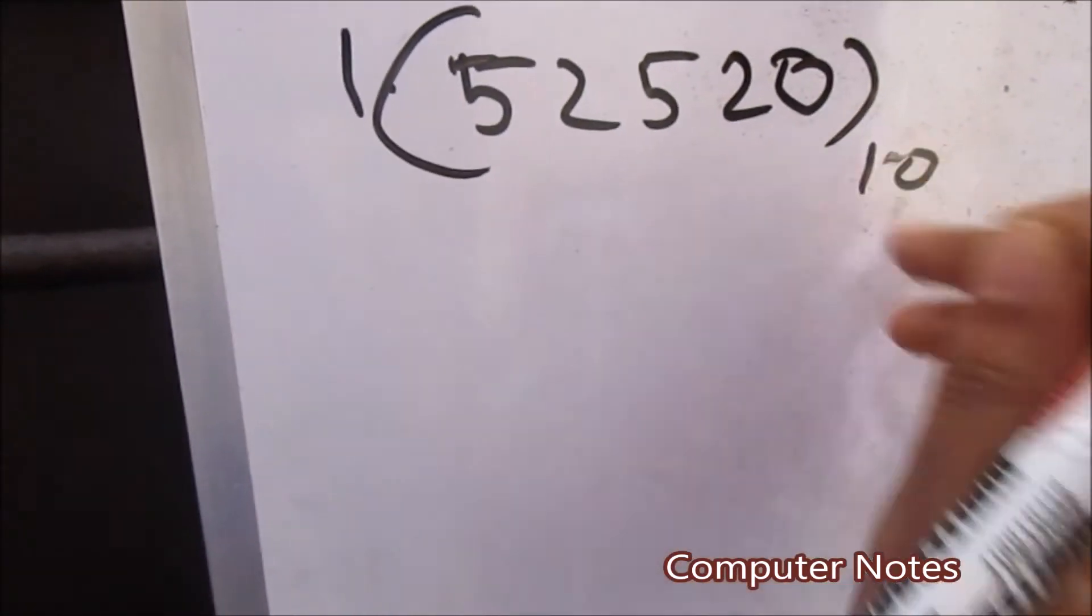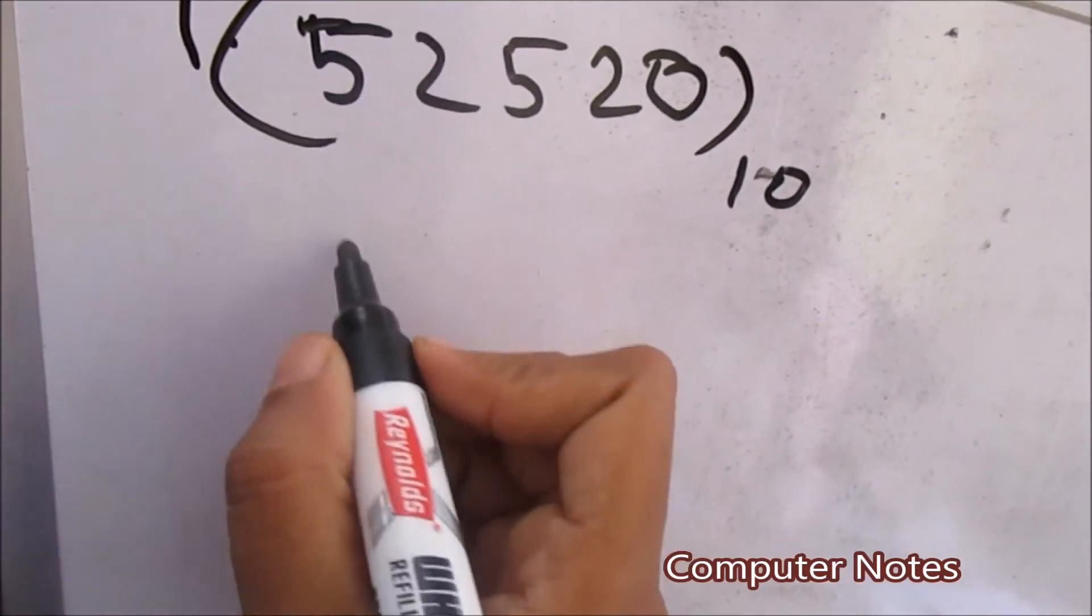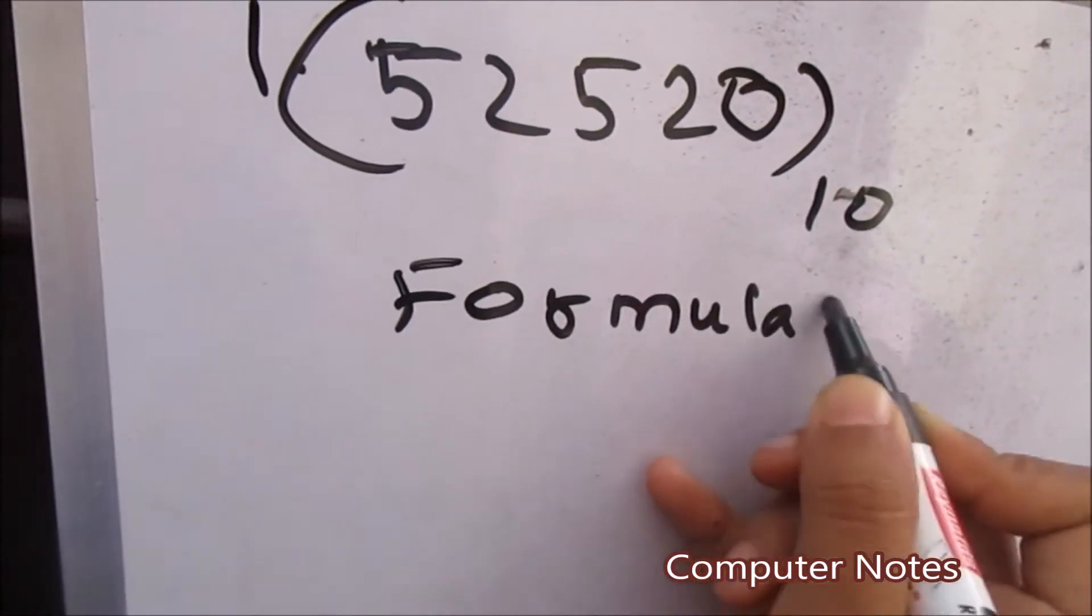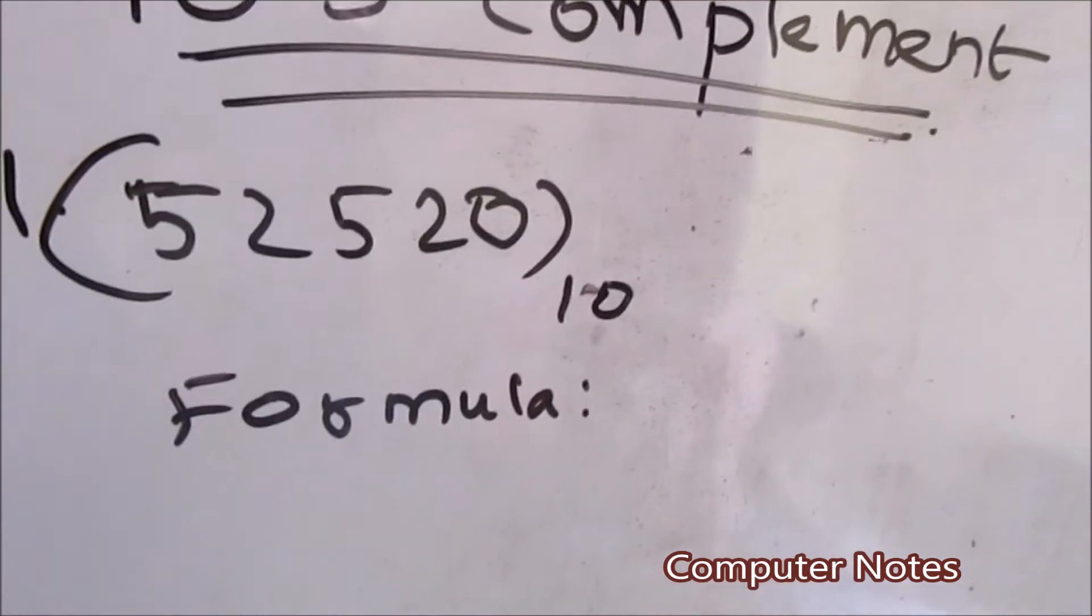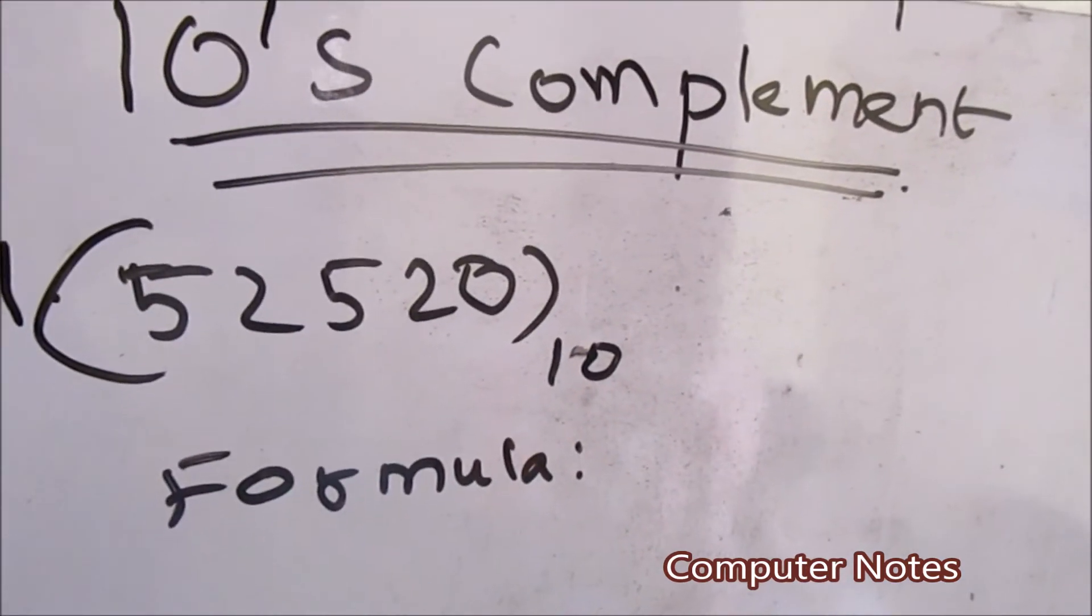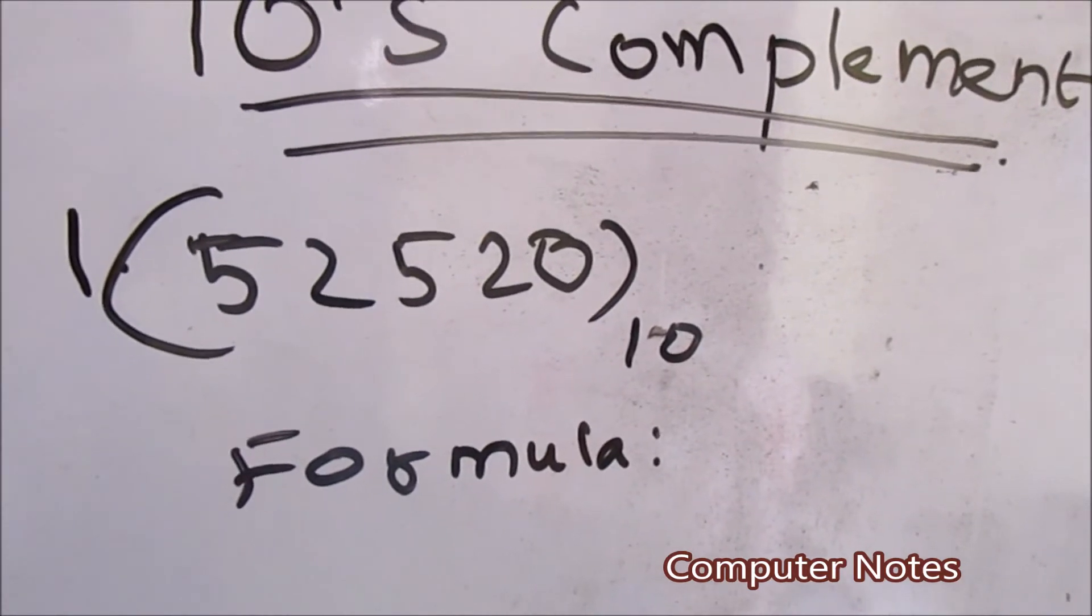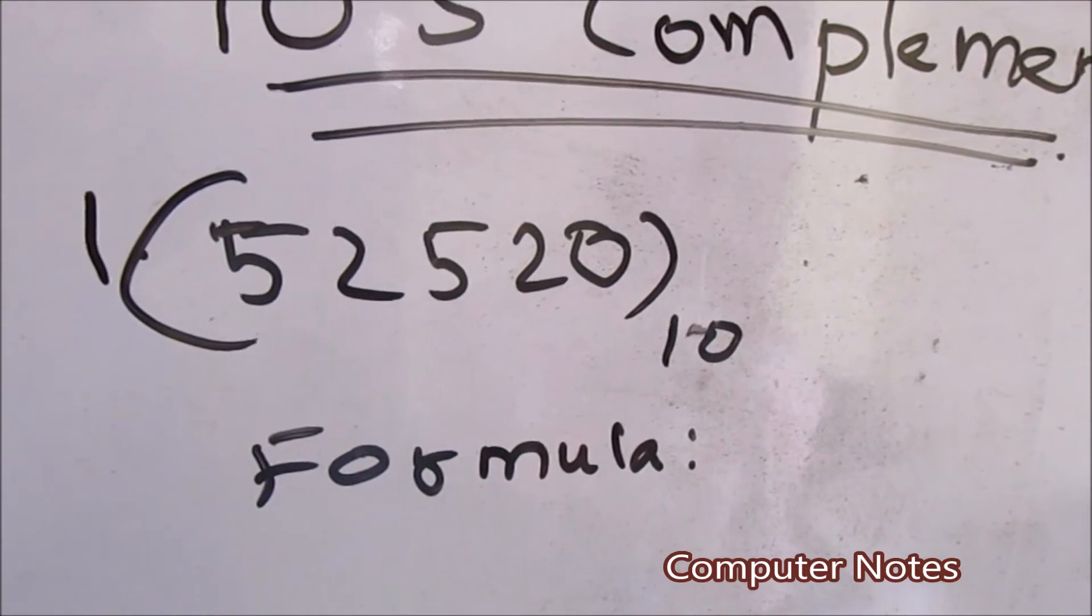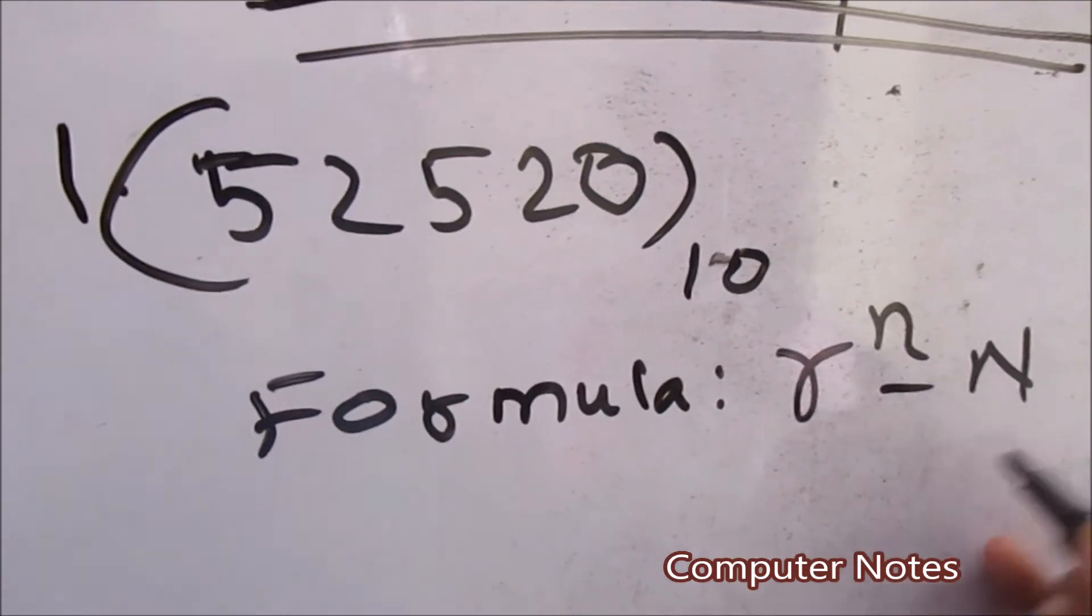In my future classes I have explained you clearly that the formula we are going to use for one's complement and two's complement. What is the formula we are going to use and what is the use of the formula and the formula expansion also. Same way in 10's complement we are going to use this formula: r^n minus N.